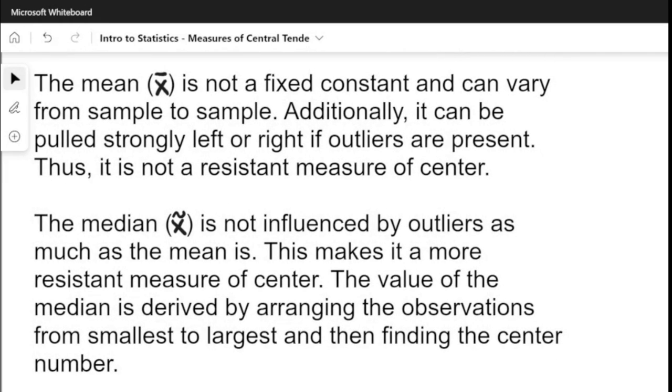The mean x-bar is not a fixed constant and can vary from sample to sample. Additionally, it can be pulled strongly left or right if outliers are present. This means it's not a very resistant measure of center because it can be strongly influenced by either really high or low variables in the data set.